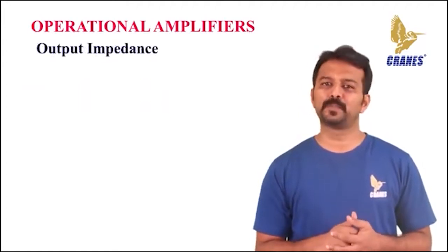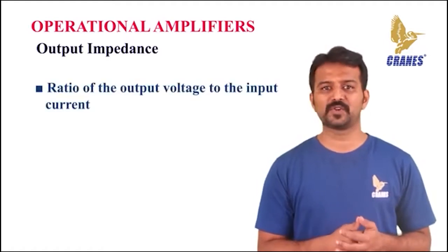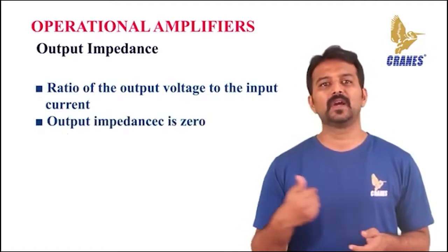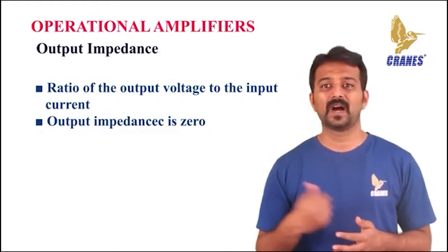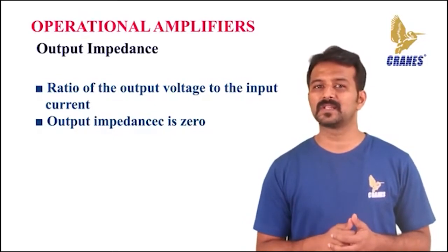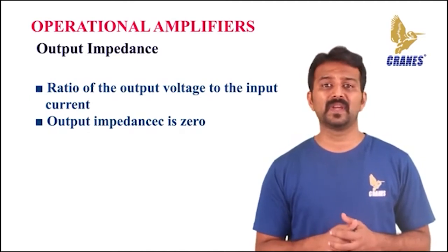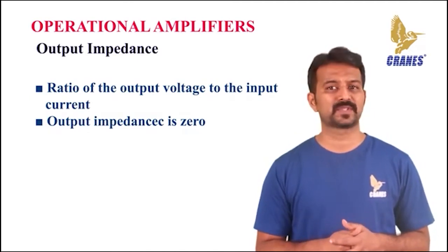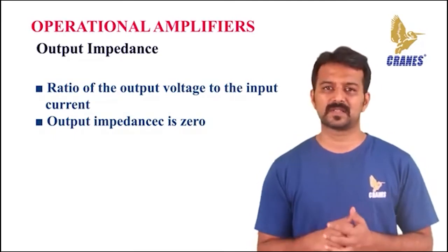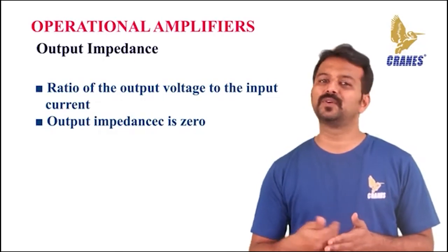Let us look into output impedance, denoted as Z-out. Output impedance is defined as the ratio of output voltage to the output current. The output impedance of an ideal op-amp is zero. However, in reality, op-amps have an output impedance of almost 10 to 20 kilo ohms. An ideal op-amp behaves like a perfect voltage source delivering current without any internal losses, while internal resistance reduces the voltage available to the load.